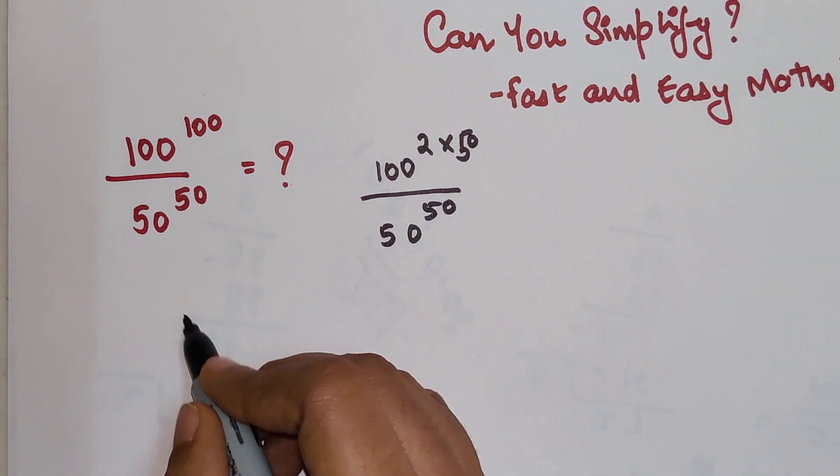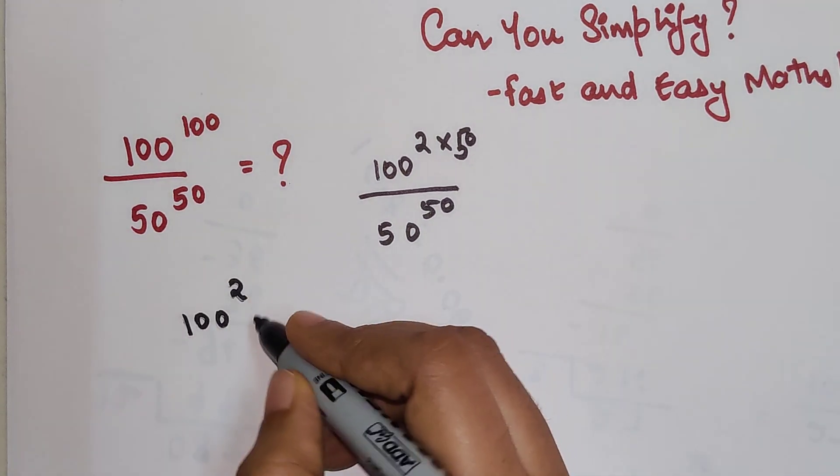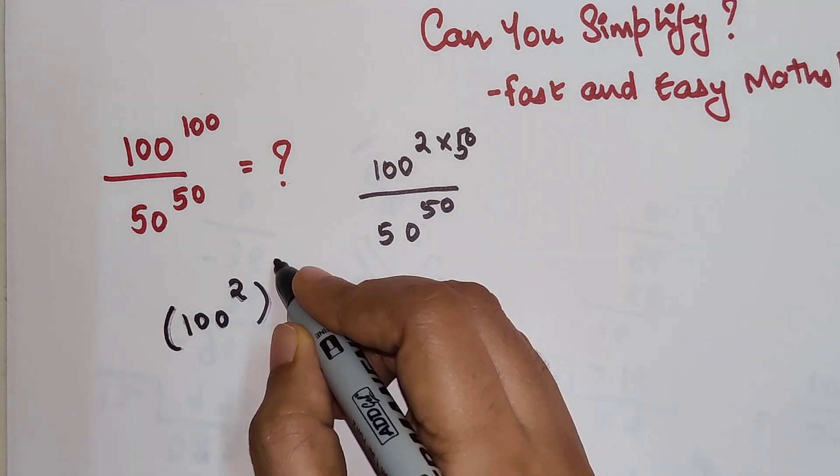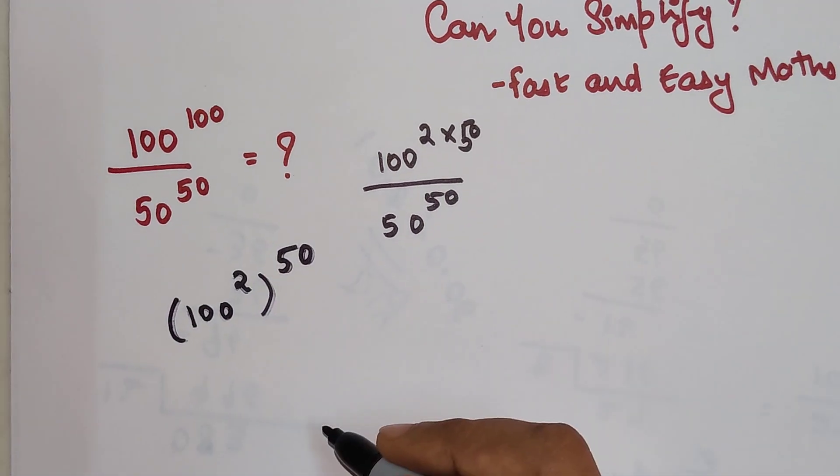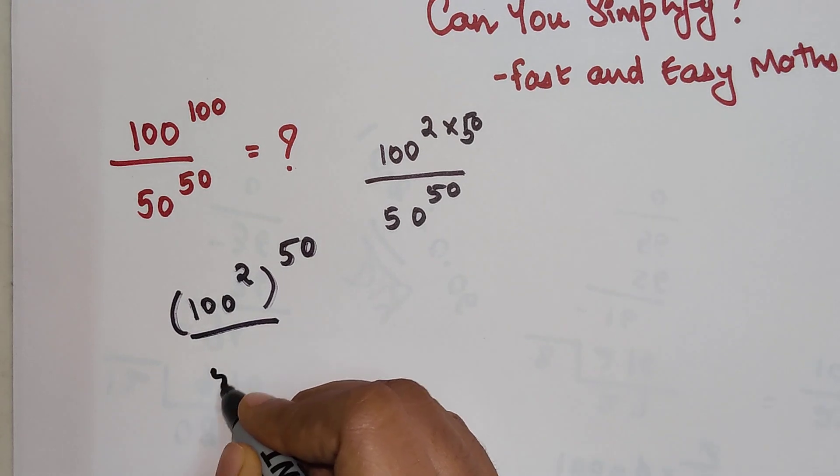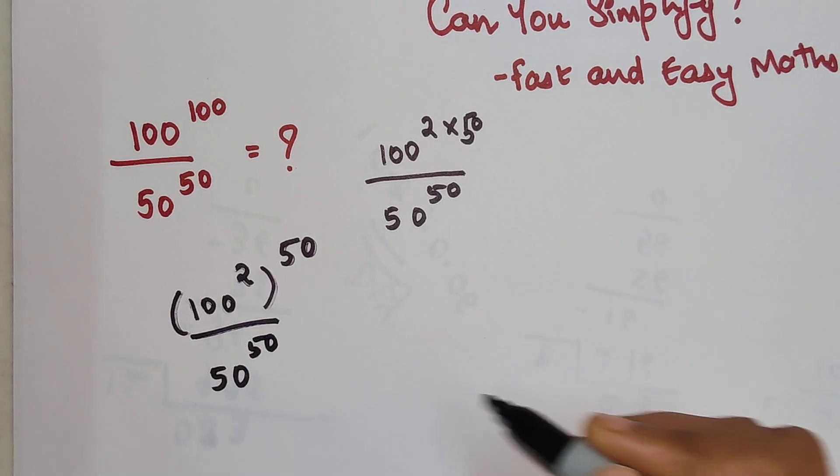So this whole question now shifts to: I can write this 2 inside and this 50 on top, and this will be 50 raised to 50.